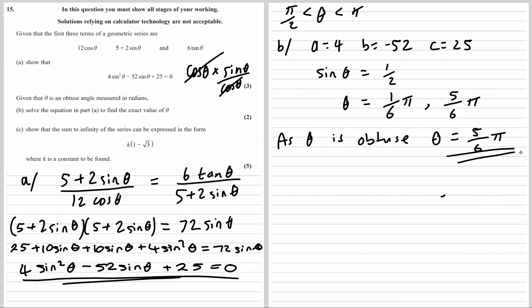So that is our answer to part b. Part c: show that the sum to infinity can be expressed in the form k times (1 minus root 3), where k is a constant. The sum to infinity is a over 1 minus r, where a is the first term and r is the common ratio.